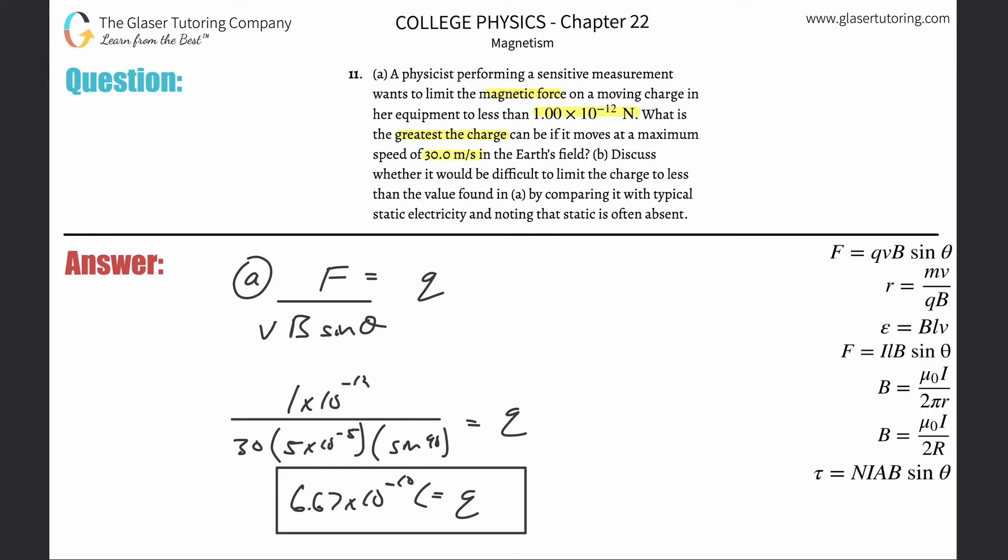Now it says discuss whether this would be difficult to limit the charge to this value. I don't know. I don't think so. I mean, I think so. This is quite tiny. I think static electricity is somewhere around 10 to the minus six Coulombs. So I think so.